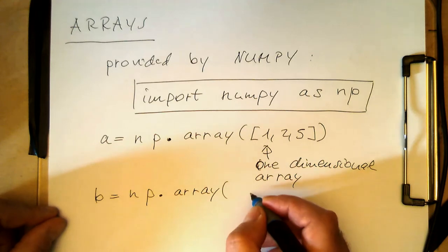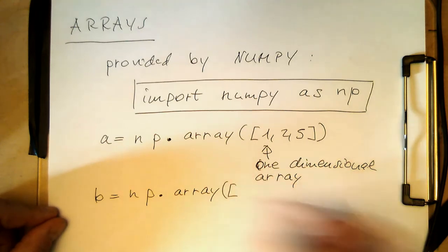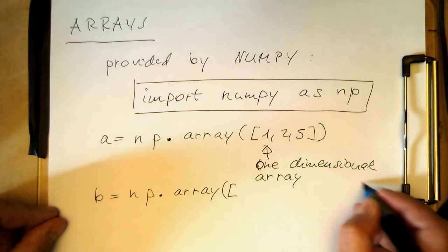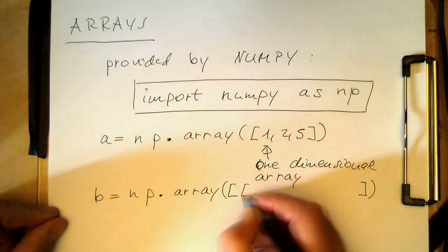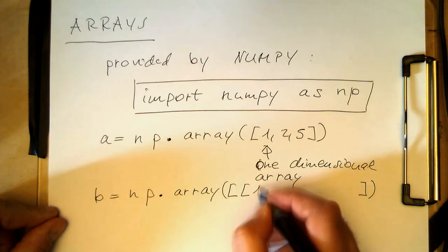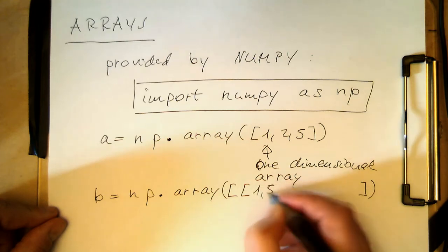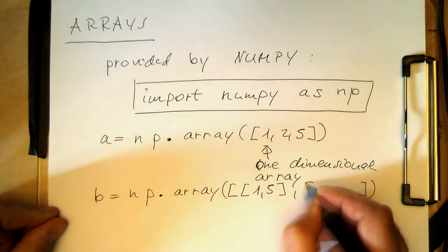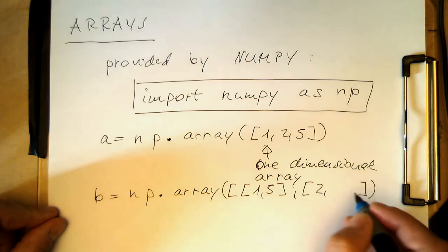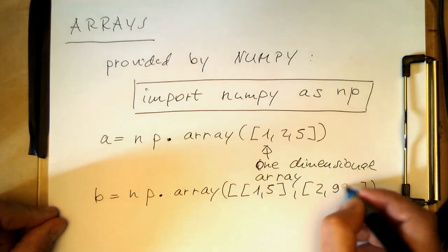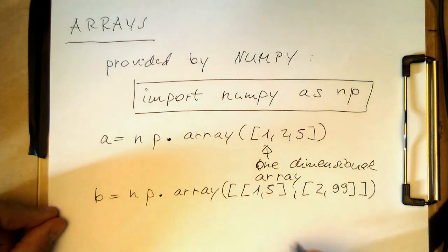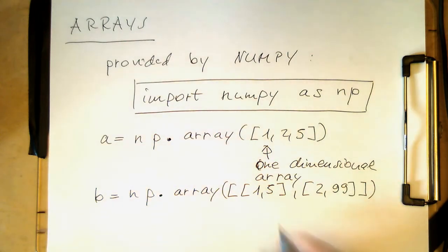We can write something like this: we do one square bracket here for the one dimension, and then we create another one here. Let's say 1 and 5, comma, and then 2, comma, 99. With that we have created a two-dimensional array.